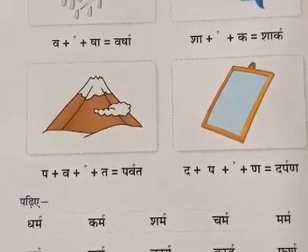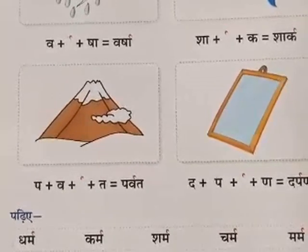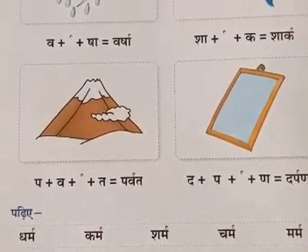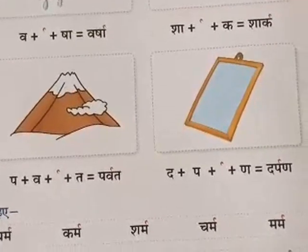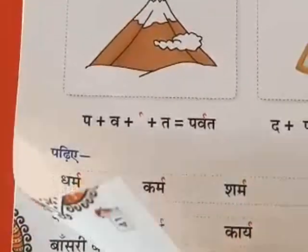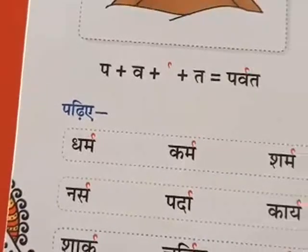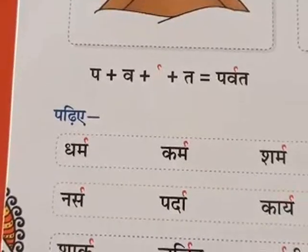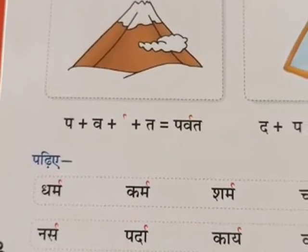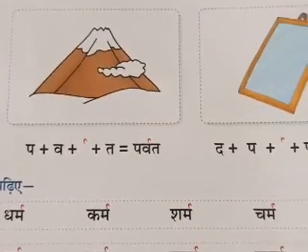Good morning all of you. Hum log ne abhi board work dekha, samjha. Aaj hum log karenge copy work. So everyone get ready for your book work. In the last class we have completed page number 43. Today we will do 44. So everyone put the CW and today's date on this page. Now let's start.